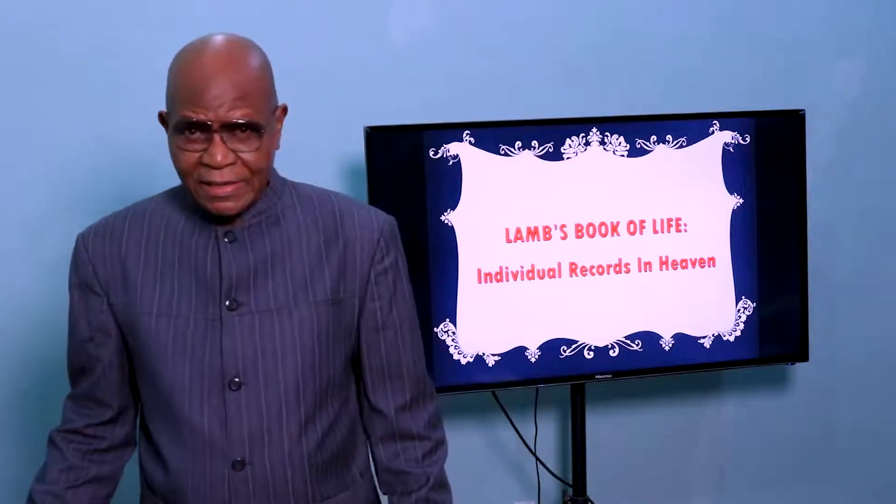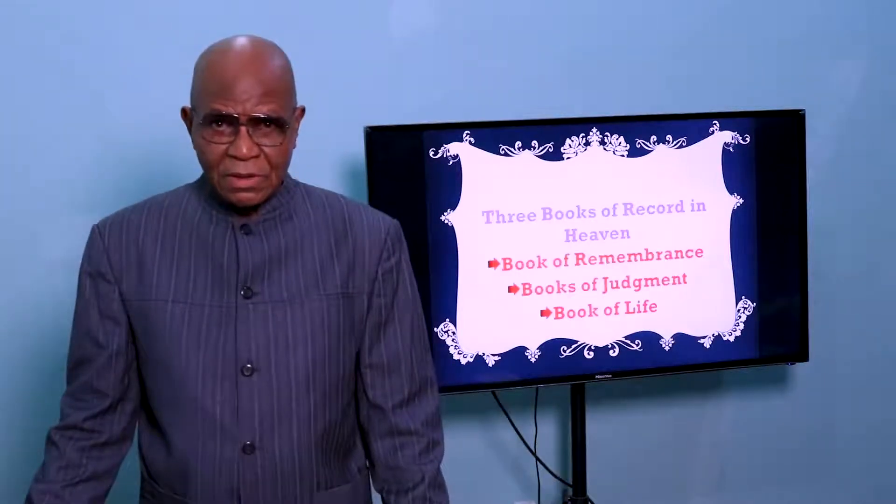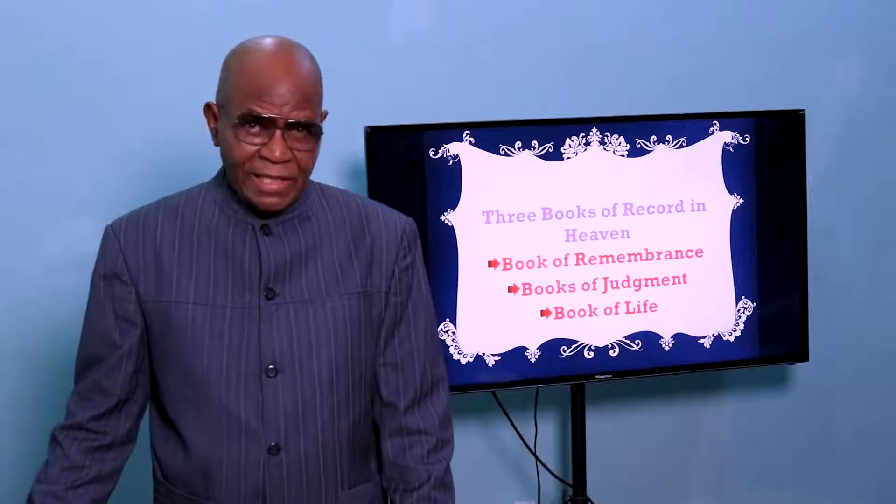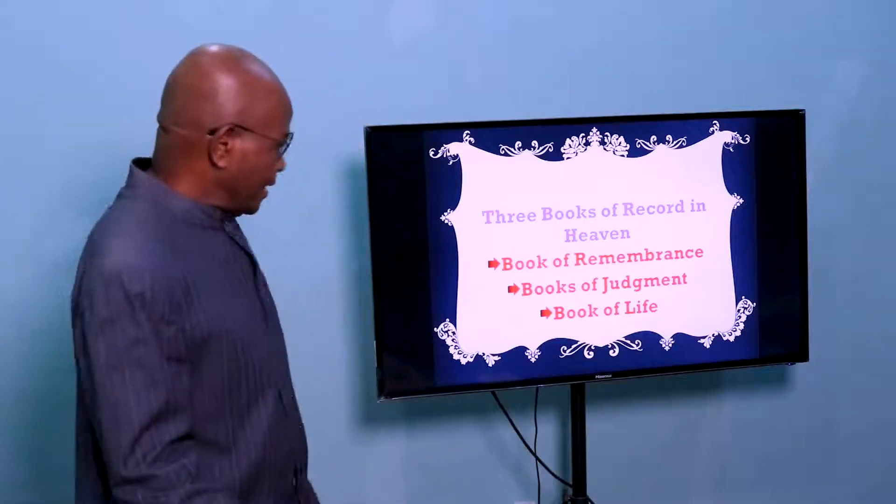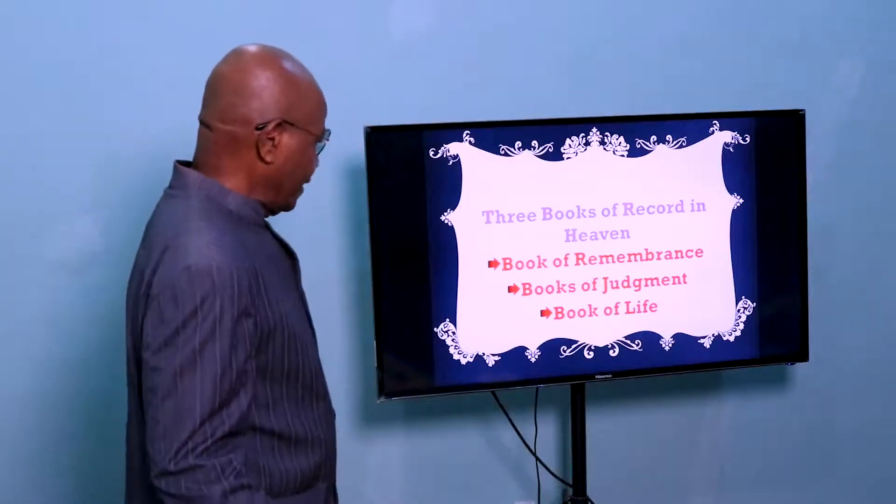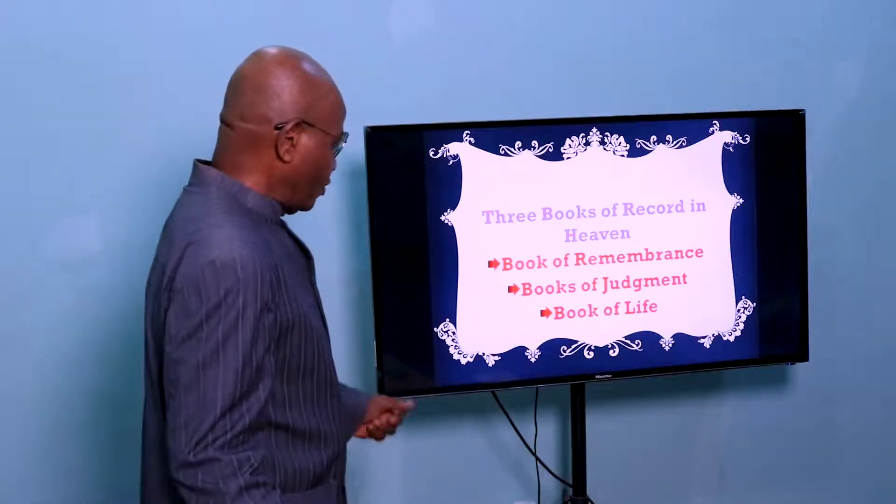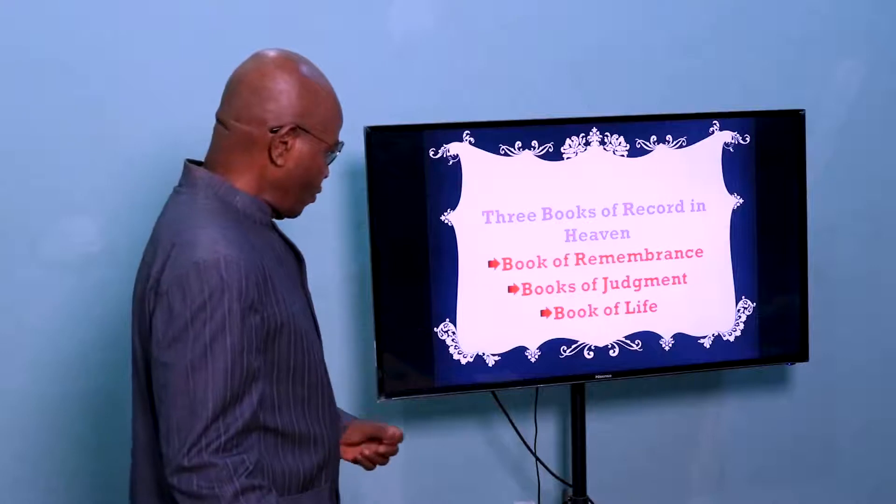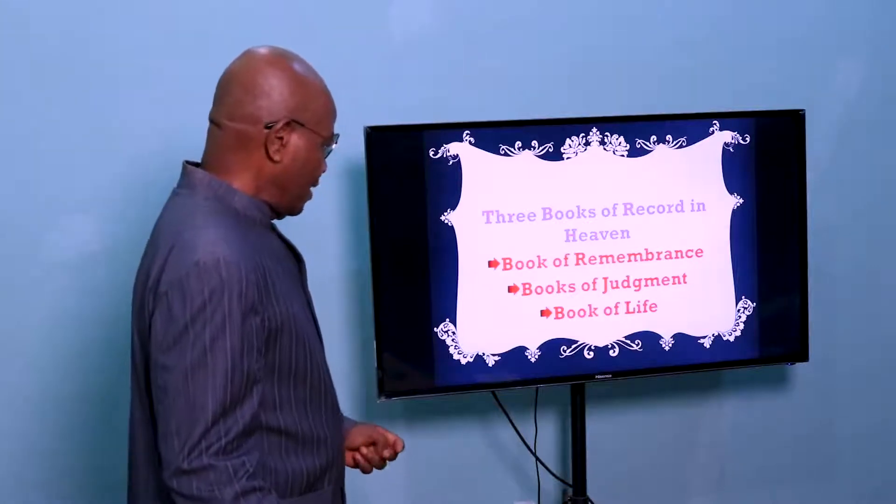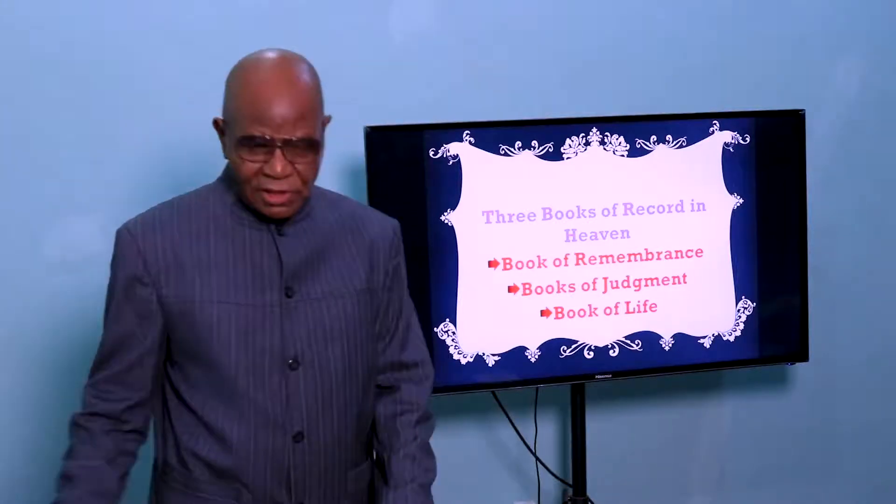You recall that in our last session, we talked about the books in heaven where records are kept. If you look at the screen, you see there are three places where records are kept in heaven. One is called the Book of Remembrance, the second one is called the Books of Judgment, and the third one is the Book of Life.